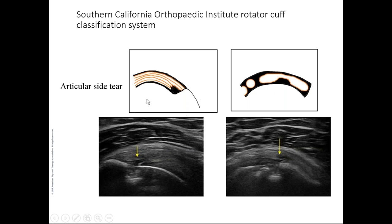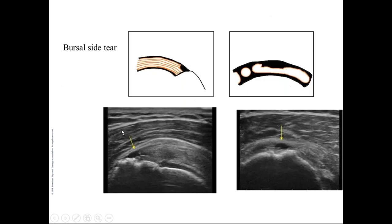A bursal-sided partial tear shows a defect on the bursa side and often cortical irregularity — an indirect sign because partial tears of the rotator cuff are often associated with an avulsion-type component at the bone. An intrasubstance tear is a focal defect within the tendon that does not communicate to the articular or bursal side — these can be missed on MR arthrography because the dye does not reach the defect.